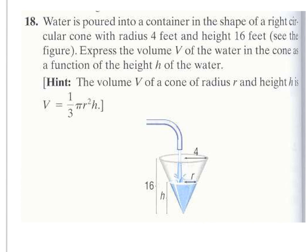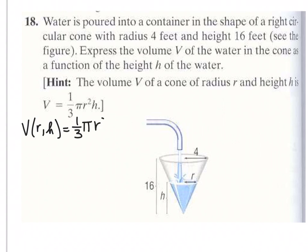Another common type is geometry problems. This one involves a right circular cone — just your typical cone — with water being poured into it. It has a radius of 4 feet and a height of 16 feet, and we want to express the volume of the cone as a function of the height of the water. The volume formula is one-third pi r squared h — exactly one-third the volume of a cylinder with the same radius and height.